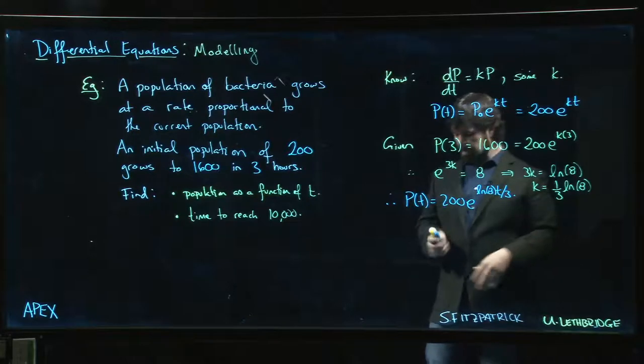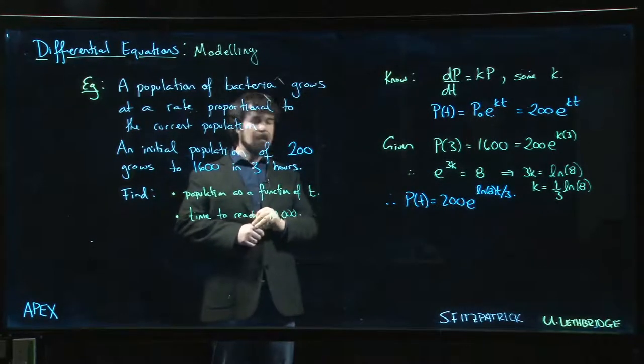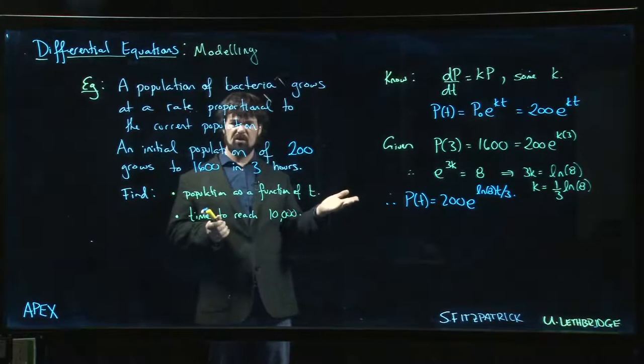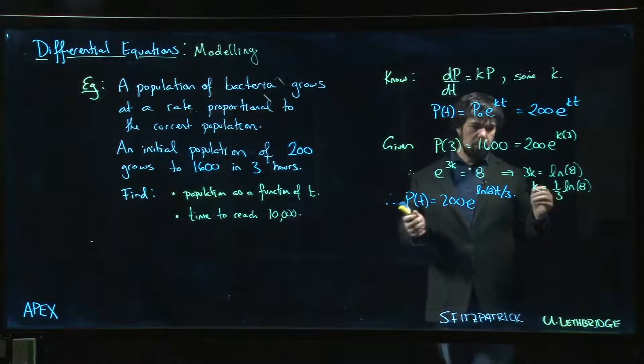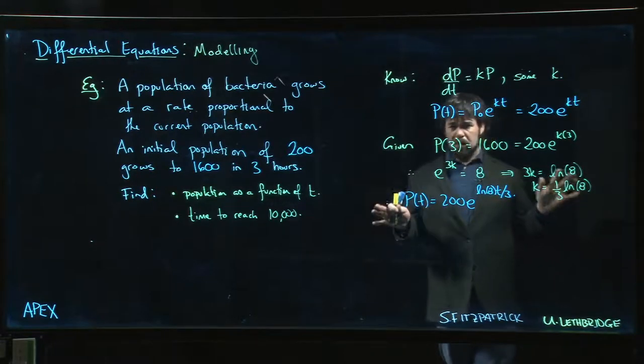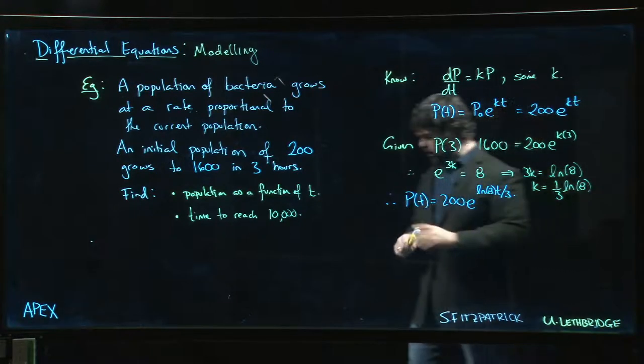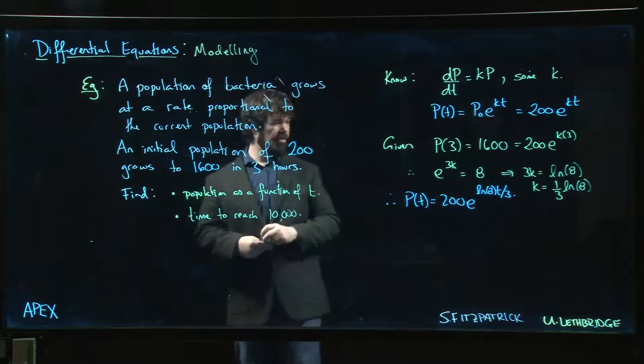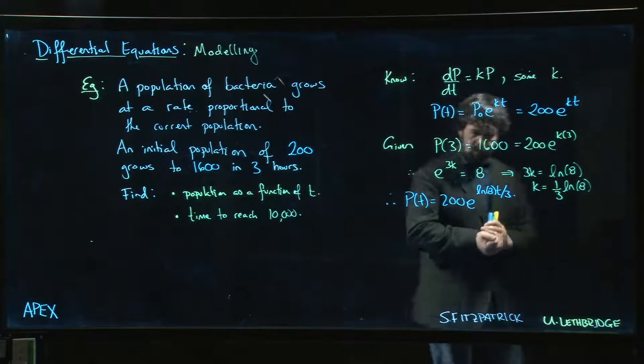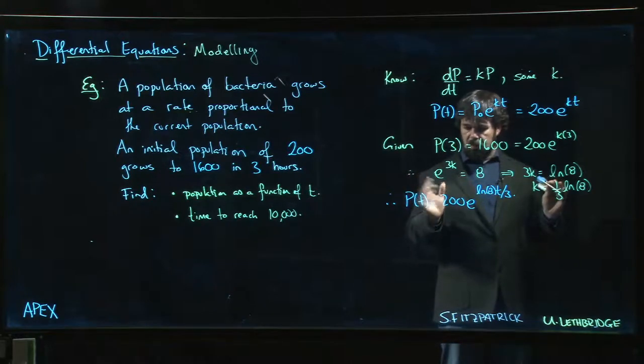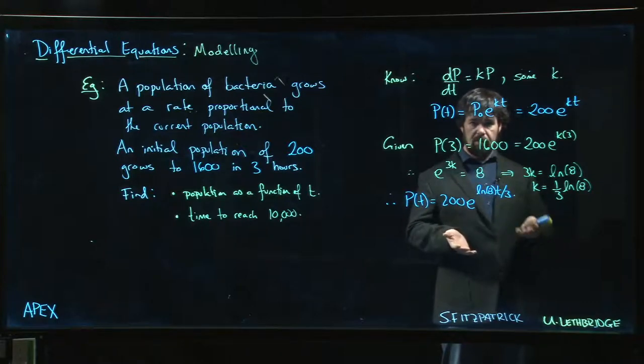You'll notice I left the exact value here. A lot of people when they solve these problems are really tempted to put that into the calculator. We could work it out—this is kind of around two-ish, I think, right? But one of the reasons why you maybe don't want to solve for that value of k as a decimal is that any decimal you write down is going to involve rounding.